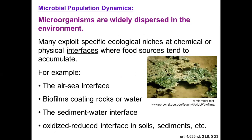Let's talk a little now about microbial population dynamics. Everyone recognizes that microorganisms are widely dispersed in the environment. Many of them exploit specific ecological niches, and one of these places we find niches are physical interfaces, because these are places where food sources tend to accumulate. Some examples of these interfaces are things like the air-sea interface or the top of a lake, biofilms, coatings on rocks or on water surfaces, the sediment-water interface, oxidized-reduced interfaces in soils and sediments, and even the interface between a landfill and the surrounding substrate.